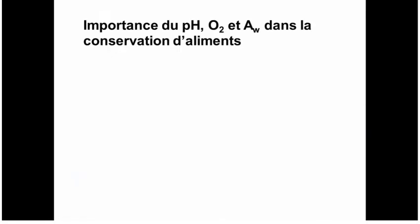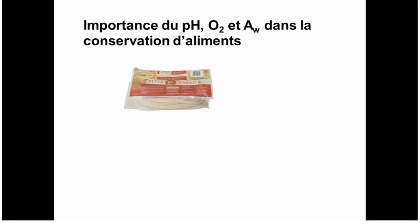Bacterial growth in foods is often controlled by a combination of physical and chemical factors. For industrial pitta bread, microbial spoilage is controlled by lower water activity — most bacteria won't grow. Mold can grow, but this is controlled by removing all oxygen from the packaging and replacing it with nitrogen and CO2, because molds like Aspergillus and Penicillium are obligate aerobes and don't grow without oxygen. If packaging is damaged and oxygen gets in, spores can germinate and consume the bread.